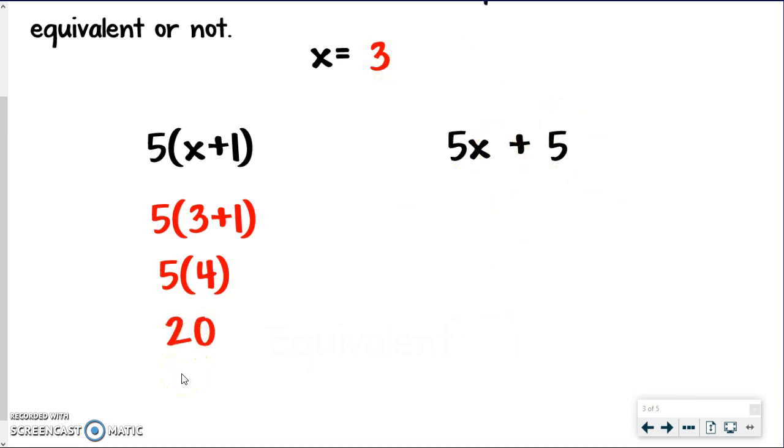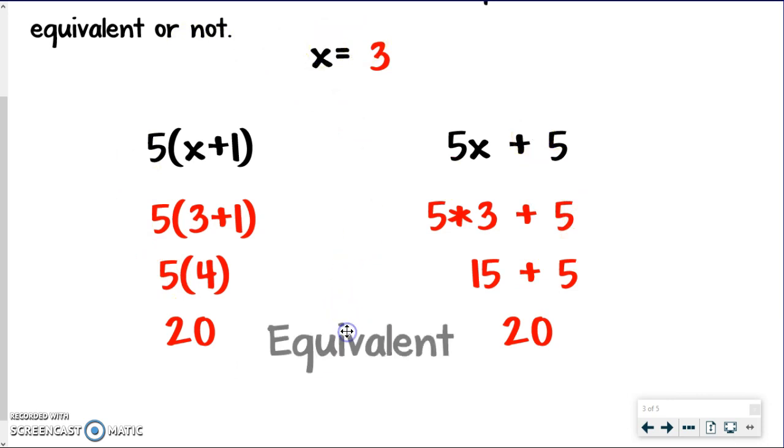So I substitute in. I'm going to do this 5 times 3 first to get 15. 15 plus 5 gives me 20. I got the same value when I substituted the same number in for x. So that means these are equivalent.